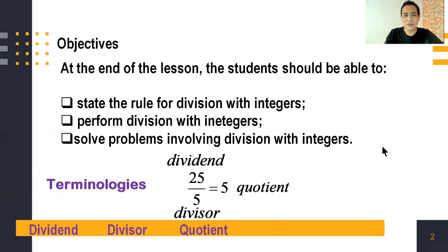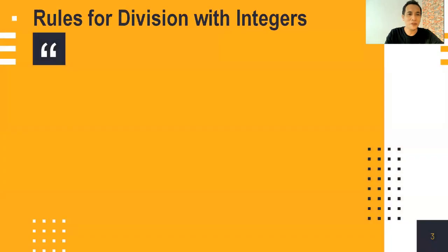If we divide the dividend by the divisor, we get the quotient. If the dividend is unknown, multiply the quotient and divisor to get the dividend. If the divisor is unknown, divide the dividend by the quotient to get the divisor. And of course, dividend divided by divisor equals the quotient.